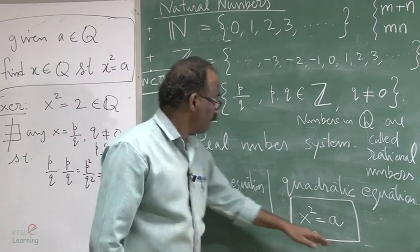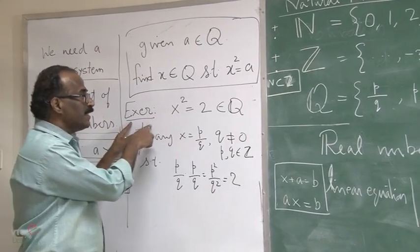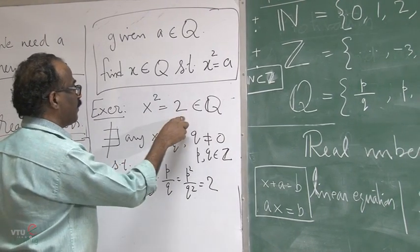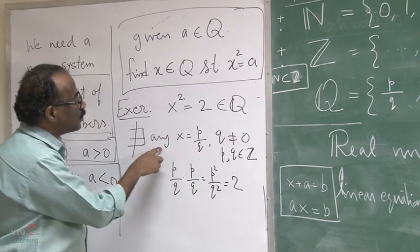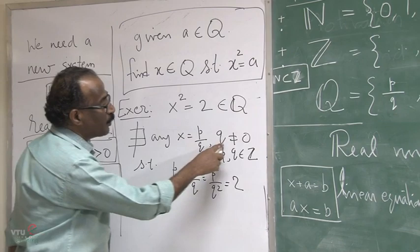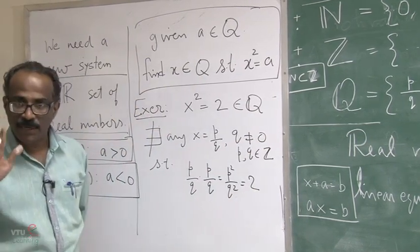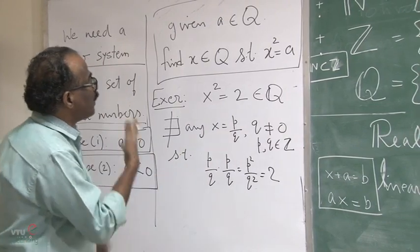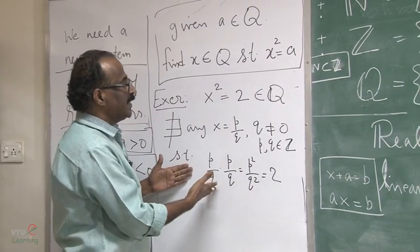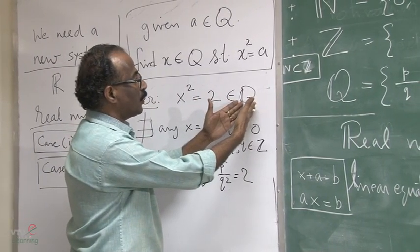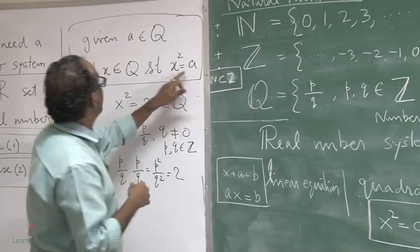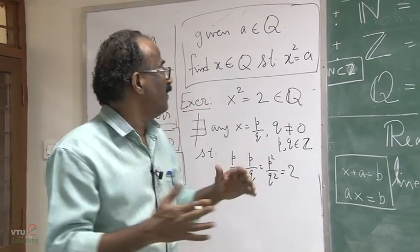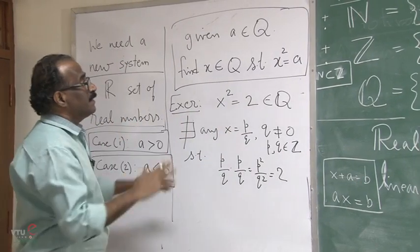Solving the quadratic is more delicate. I gave the exercise that x squared equal to 2: if you want a rational number satisfying this, you can prove there does not exist any x equal to p over q with q not equal to zero satisfying this equation. So this equation cannot in general be solved in Q — meaning x squared equal to a cannot be solved in Q — and that forces us to introduce a new number system.